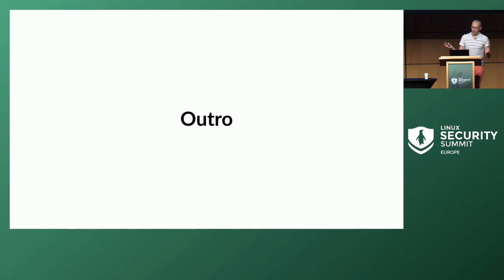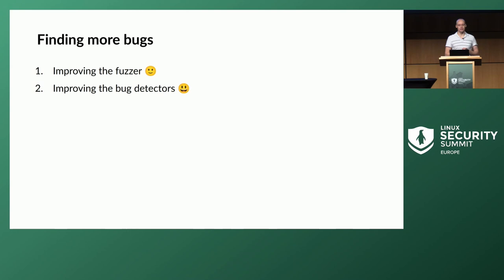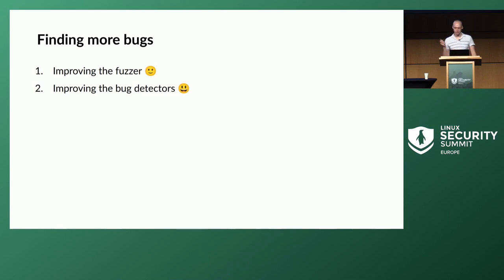To summarize: if you want to find even more bugs, you can improve the fuzzer — improving syscall descriptions is probably easier than modifying bug detectors. But you can also improve the bug detectors, and this is something nobody else seems to do, which means it might lead to new results. Everybody knows how to write syscall descriptions, and many people cover the same subsystems repeatedly. Extending sanitizers is less common and could yield unique findings.